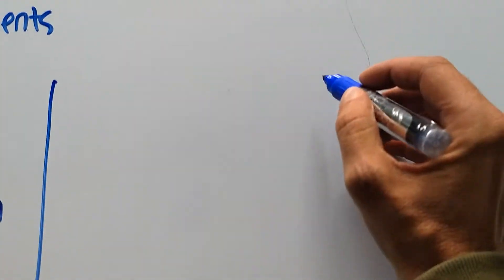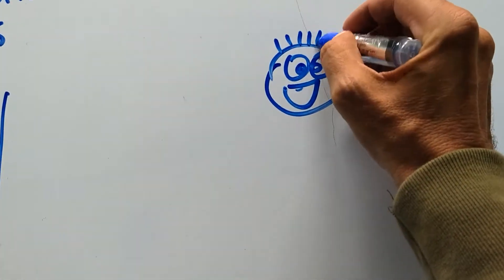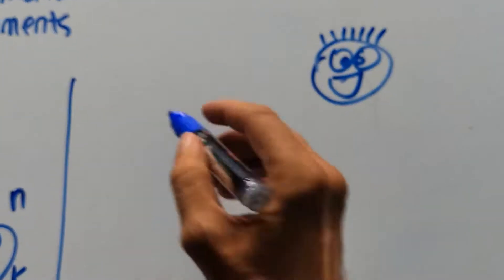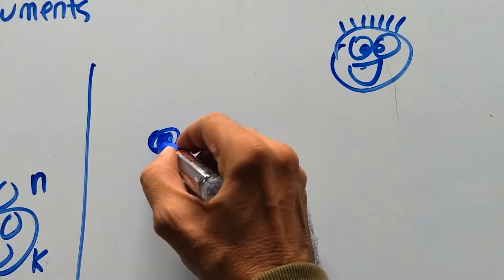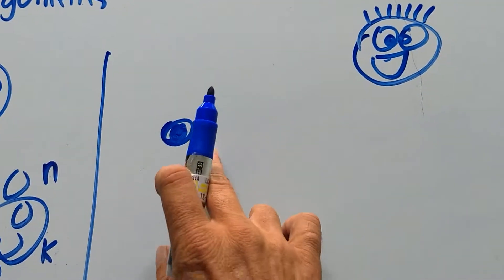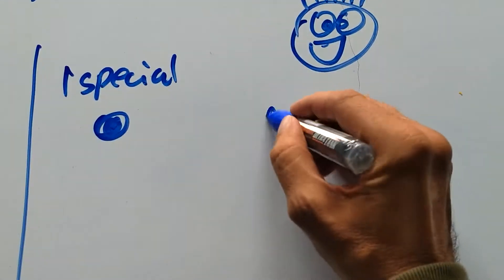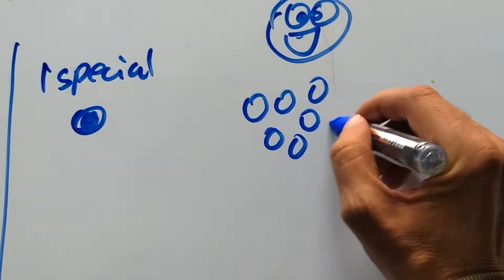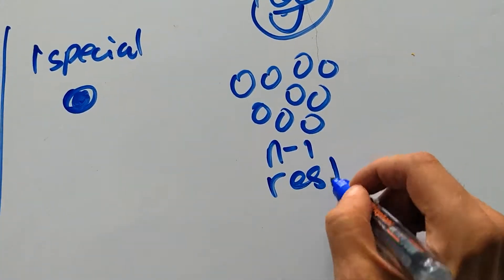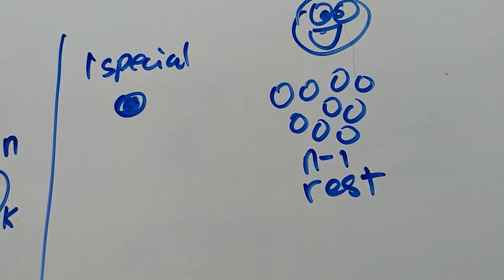Bob, of course, has to be different. Bob's mind is a lot more complicated, as you'll see. He separates these objects into two groups: you've got one special object here, and then N minus 1 — the rest.